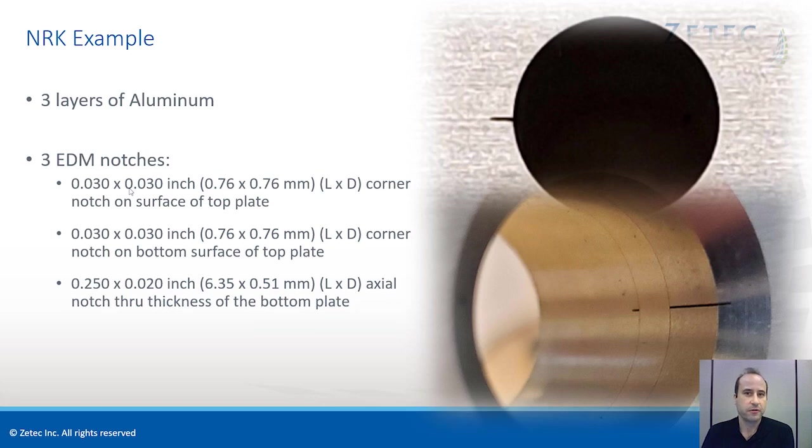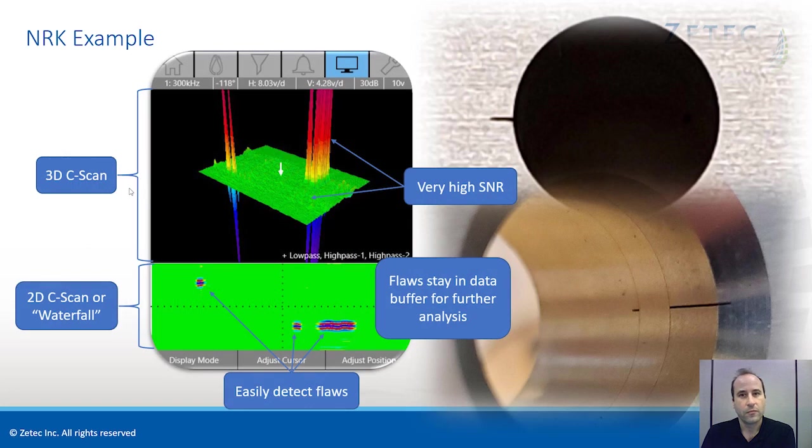Anyone familiar with bolt hole exams knows about the common NRK calibration block. There are many different types of these blocks, but they all basically have three layers of metals with a small EDM notch at the top and another one at the bottom of the first layer. It has a clean middle layer and a long EDM notch at the third layer. Now let's see what the data from one of these holes looks like on a C-scan. So in this view here, there are two C-scans. There's a 2D, I call this a waterfall plot, at the bottom, and then a 3D display on the top. You can easily identify the three EDM notches from the NRK block and notice the amplitude of the notching compared to the noise floor. It's a very large difference. This is a very high SNR. The data is displayed on a scrolling data buffer so you can view the hole in its entirety. You can stop acquisition and review the last 60 seconds of data if desired.